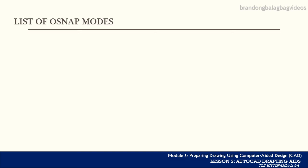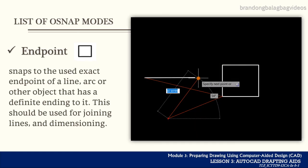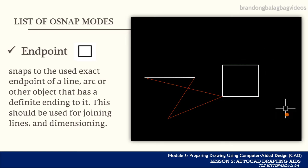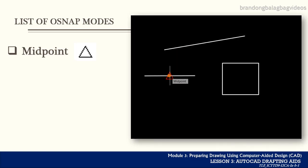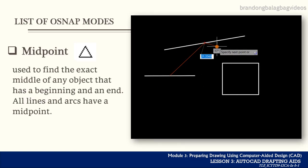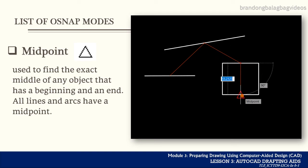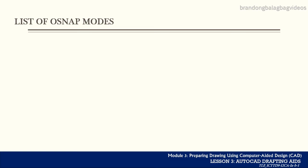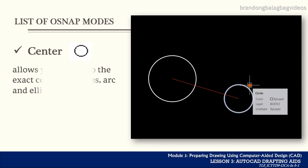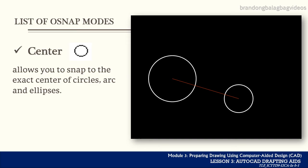Let us now discuss the different object snap modes in AutoCAD. The endpoint is represented by a square or box, and it helps us snap to the exact endpoint of a line, arc, or other object that has a definite ending. The endpoint is useful when we need to join lines and when we need to do dimensioning. Another OSNAP mode is the midpoint, which is used to find the exact middle of any object that has a beginning and an end — all lines and arcs have a midpoint. We also have the center OSNAP, which is used to snap to the exact center of circles, arcs, and ellipses.